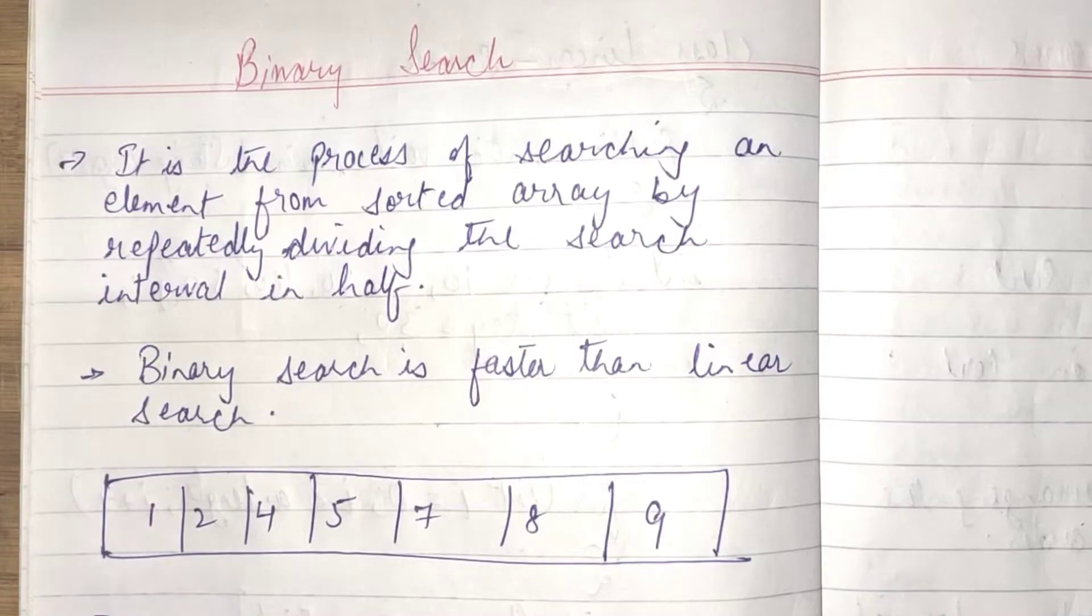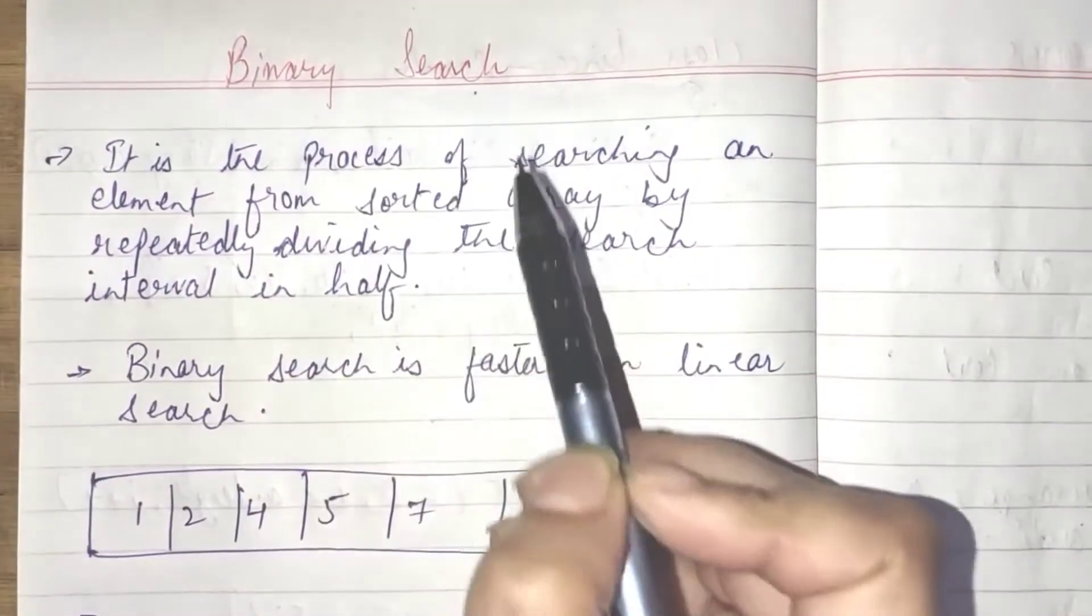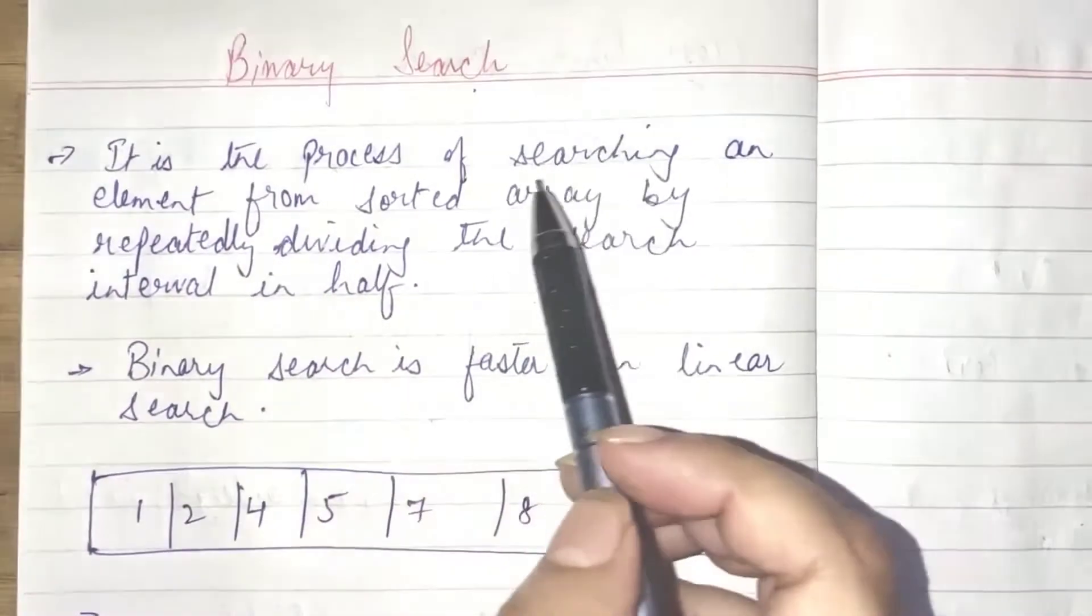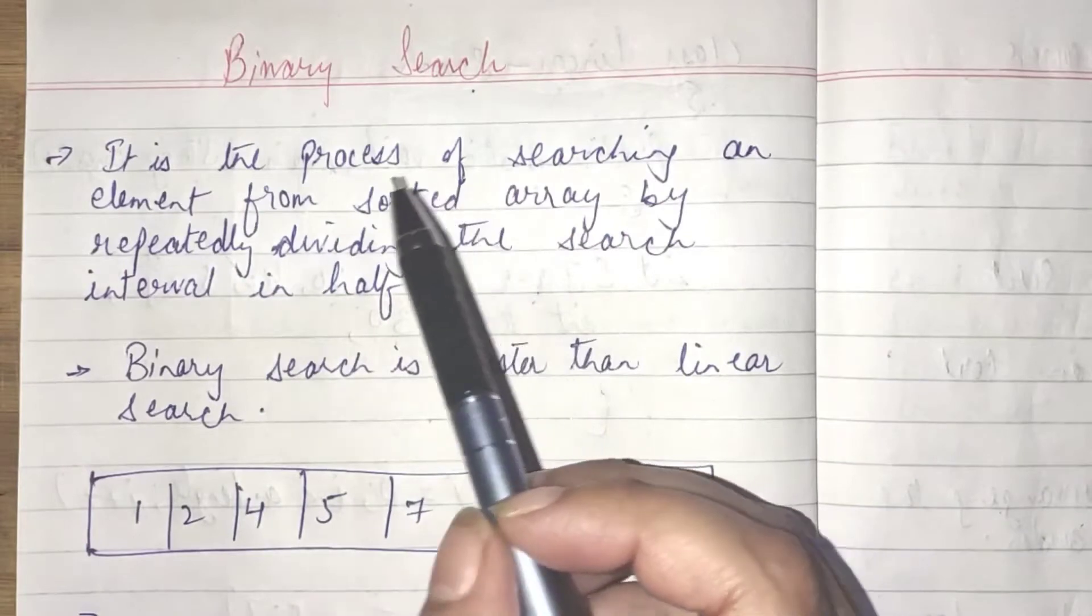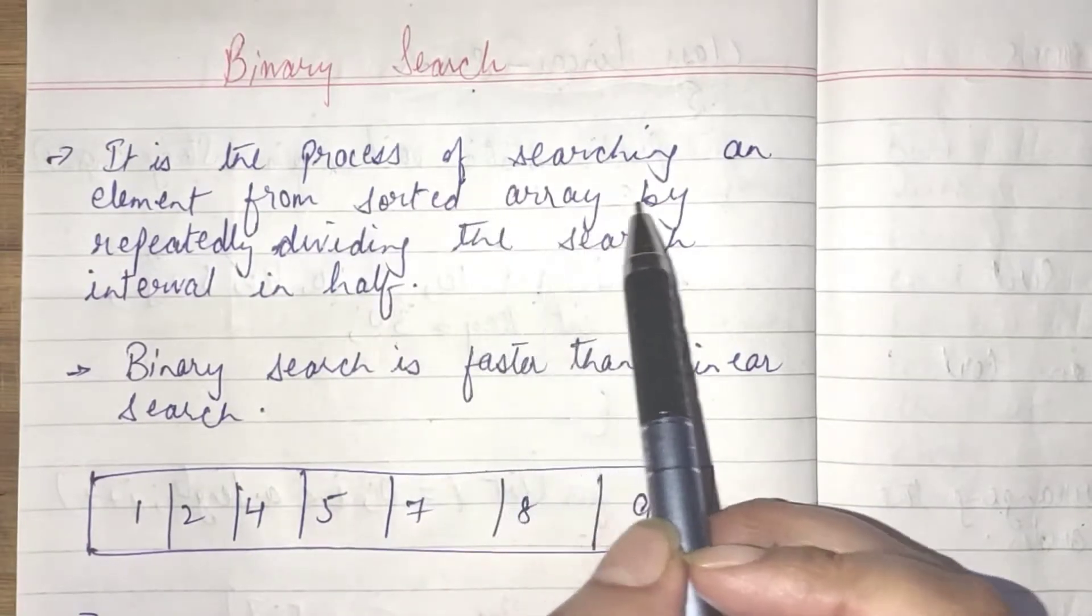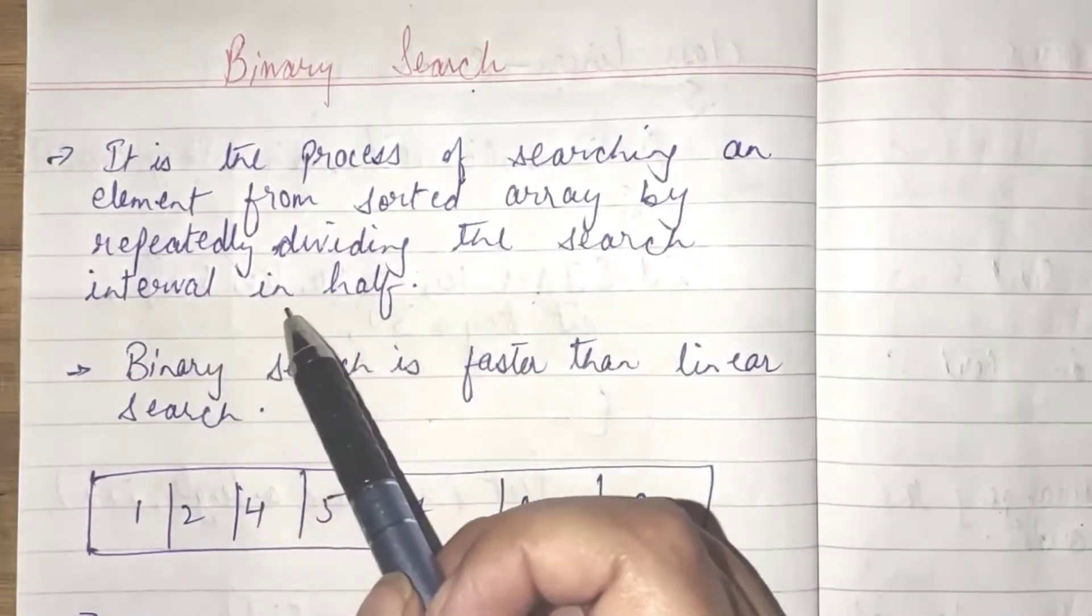In this part of the video, we will discuss about binary search. Let's see. In binary search, the process of searching of an element from sorted array by repeatedly dividing the search interval in half.